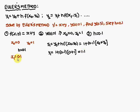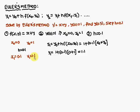So, x1 is equal to x0 plus h: 0 plus 0.1 gives 0.1. And y1 is equal to 1.1. That means for x equal to 0, the value of y is 1. For x equal to 0.1, the value of y is 1.1.